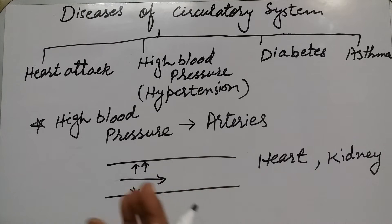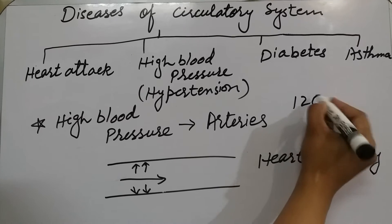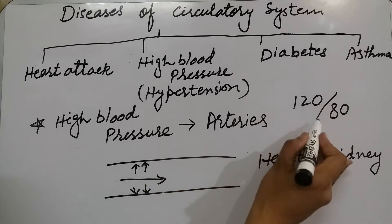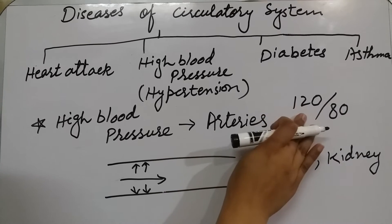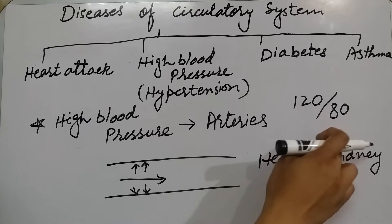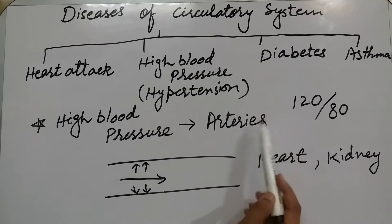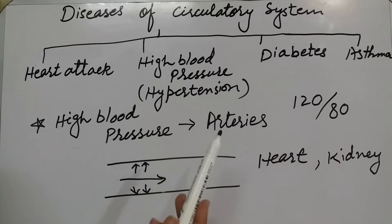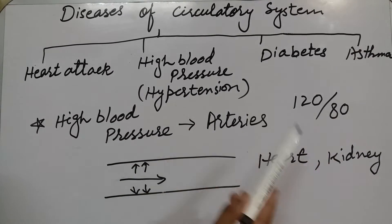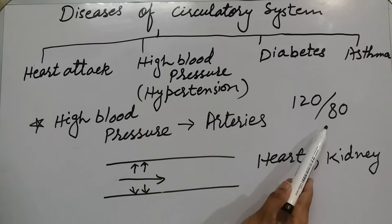Blood کے pressure کی ایک average normal ratio ہے: 120/80۔ اس میں 120 upper part of the body کا pressure ہے اور 80 lower part of the body کا pressure ہے۔ اگر یہ normal range سے بڑھ جائے — جیسے 120 سے بڑھ کر 130، 140، 150 ہو جائے، یا 80 سے بڑھ کر 90، 100، 110 ہو جائے — تو اسے high blood pressure کہیں گے۔